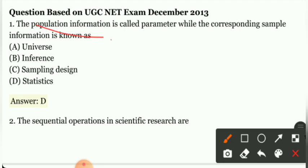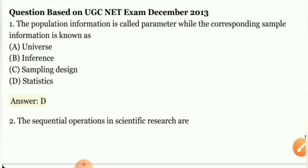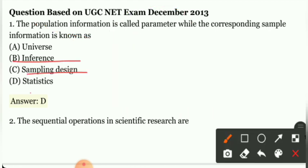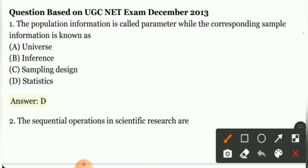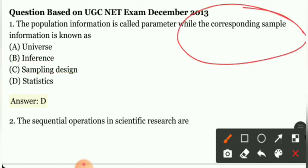So here we will talk about population information as parameter while corresponding sample information is universe, inference, sampling design, or statistics. So guys, here corresponding sample information is called statistics, so option D is your right answer.